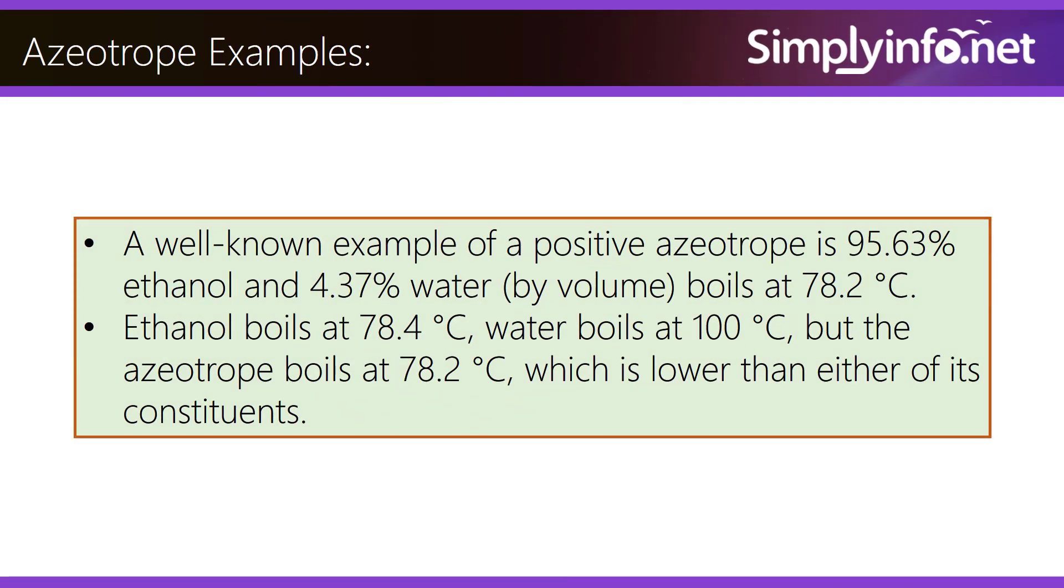A well-known example of a positive azeotrope is 95.63% ethanol and 4.37% water by volume, which boils at 78.2 degrees Celsius.